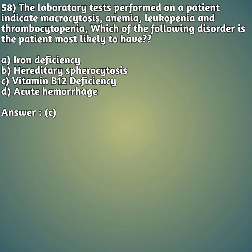Moving on to our 58th question - this is a case study question. Laboratory tests performed on a patient indicate macrocytosis, anemia, leukopenia, and thrombocytopenia. Macrocytosis means enlargement of RBCs; anemia means hemoglobin is below normal; leukopenia means WBC count is very low; thrombocytopenia means platelet count is also very low. Which of the following disorders is the patient most likely to have? Option A: iron deficiency anemia. Option B: hereditary spherocytosis. Option C: vitamin B12 deficiency. Option D: acute hemorrhage.